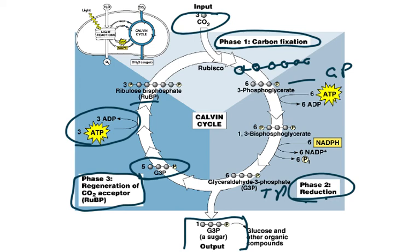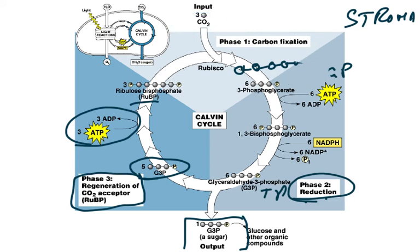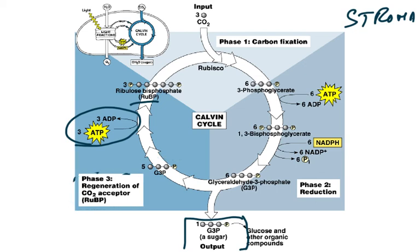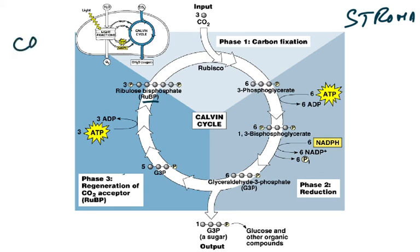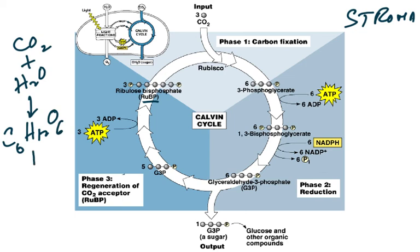All of this takes place in the stroma of the chloroplast. The Calvin cycle results in the formation of glucose. At O-level we studied the overall equation: CO₂ + H₂O → C₆H₁₂O₆ + O₂. We now understand this more deeply through the light-dependent and light-independent reactions.